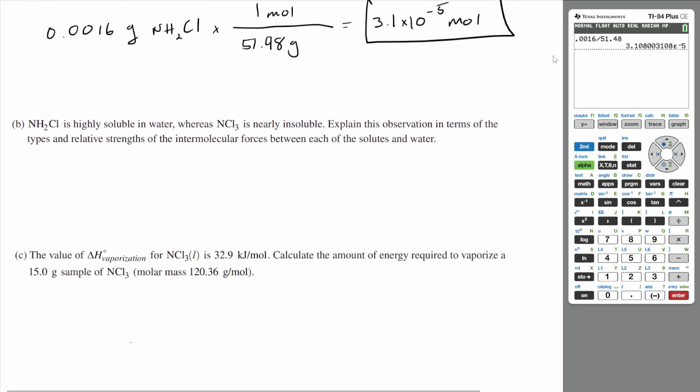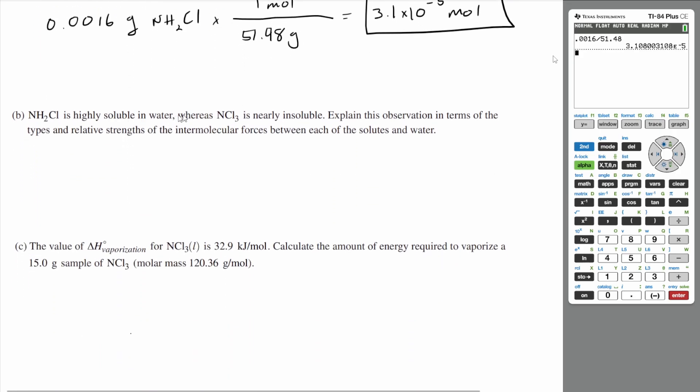Let's go on to part B. NH2Cl is highly soluble in water, whereas NCl3 is nearly insoluble. Explain this observation in terms of the types and relative strengths of the intermolecular forces between each of the solutes and water.